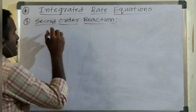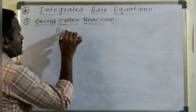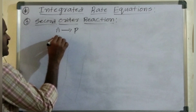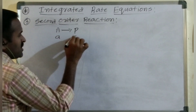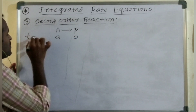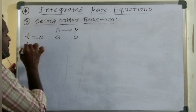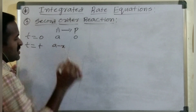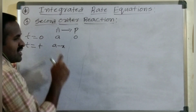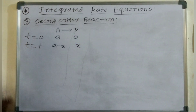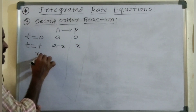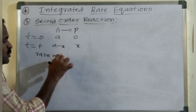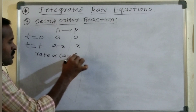Consider a second order reaction: A giving rise to product P. The initial concentration is 'a' at T equals 0. At a particular time T, the initial concentration changes. A minus X is the leftover concentration. According to the law of mass action, rate is directly proportional to (A minus X) whole power 2.